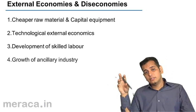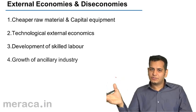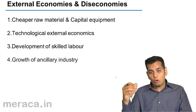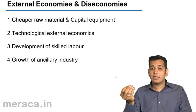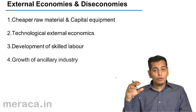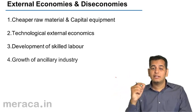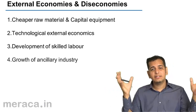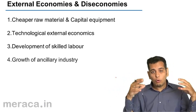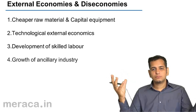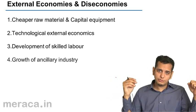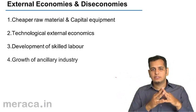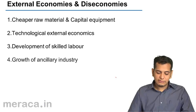Now, if each of these ancillary industries grows, you will tend to come out with a better product, or produce at a cheaper rate, or produce in lesser time. So when the ancillary industries grow, you also tend to grow and increase your production. When this happens, we call it economies of scale due to growth of ancillary industries.